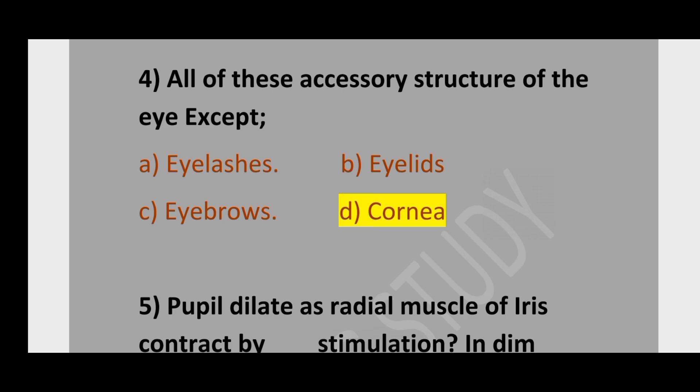Question number 4. All of these are accessory structures of the eye except: option A, eyelashes; option B, eyelids; option C, eyebrows; option D, cornea. The correct option is cornea.